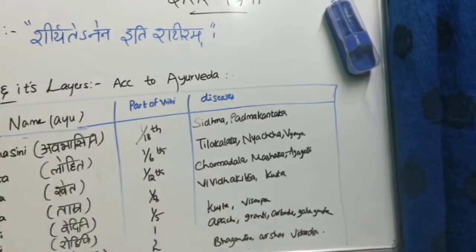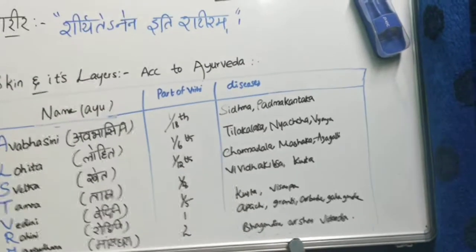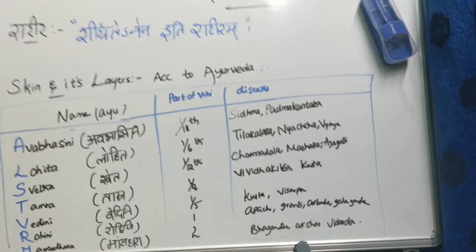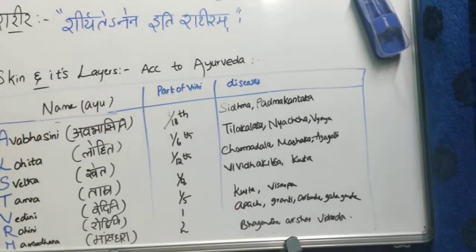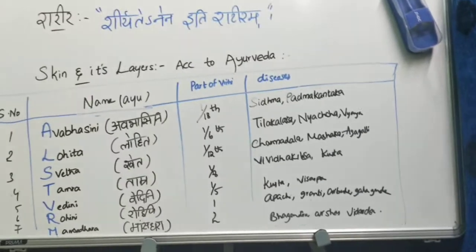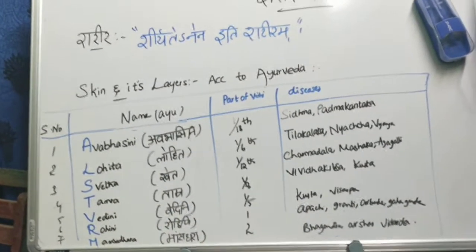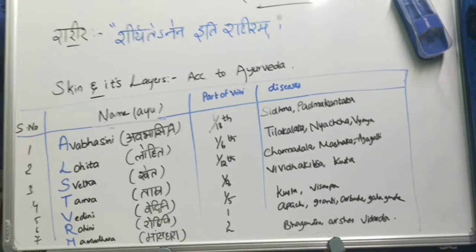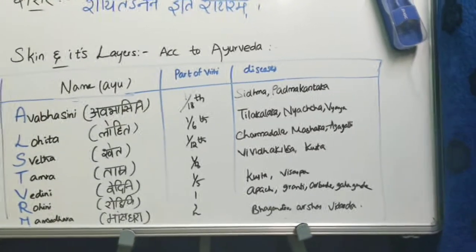So in this Sharirachana topic of skin and its layers according to Ayurveda, we have seven layers. The mnemonic 'Alohashweta Veroma' helps remember the order and their Rihi measurements: 1/8, 1/6, 1/12, 1/8, 1/5, 1, 2 — this way it is easy to remember.